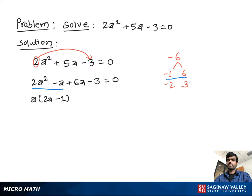Now from this pair we take positive 3 as a common, so we have 2a minus 1 all equal to 0. Now from both sides we take 2a minus 1 as common. Then we have remaining a plus 3 all equal to 0.